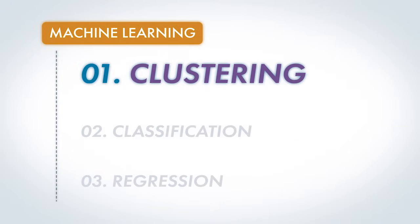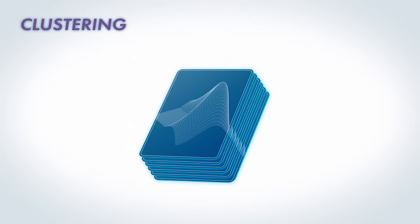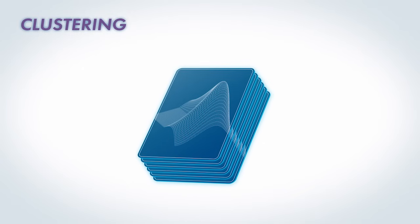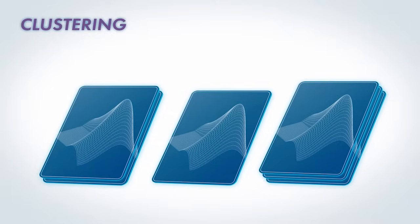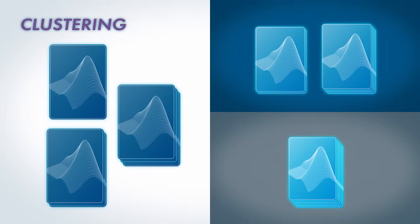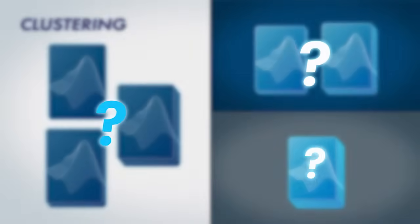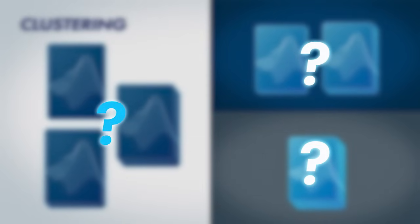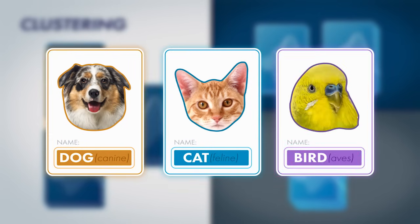First, we'll talk about clustering. Suppose I give you a stack of cards with pictures on them, and I ask you to sort the cards into groups. Different people group these cards in different ways. What's on these cards to cause that to happen? Well, they're pictures of dogs, cats, and birds.